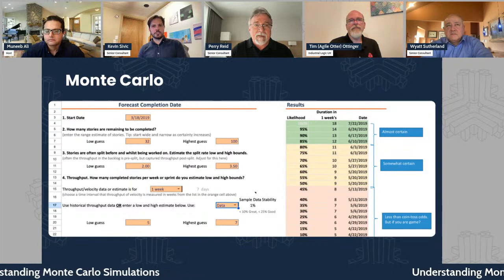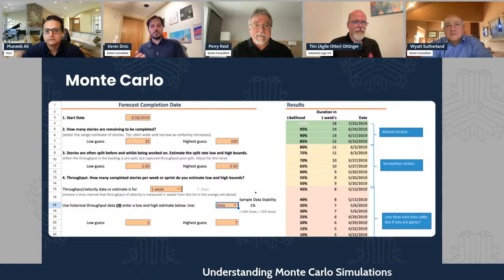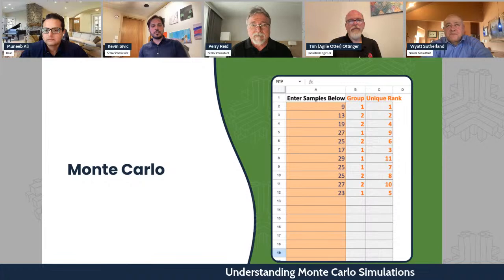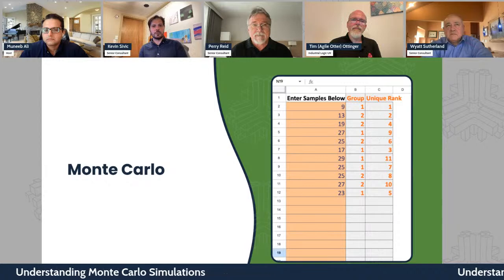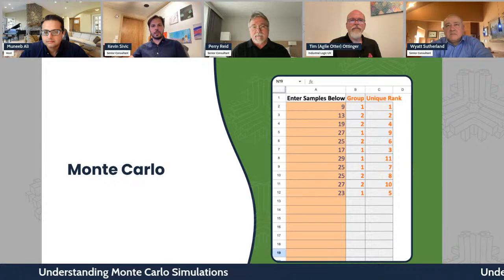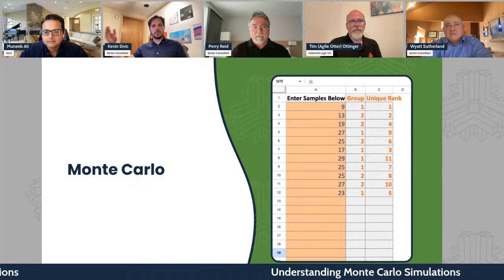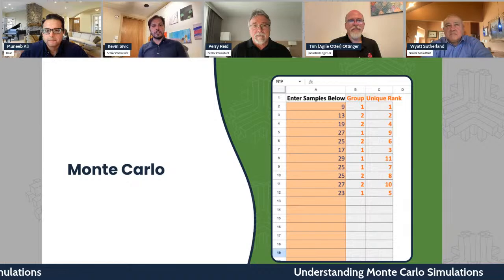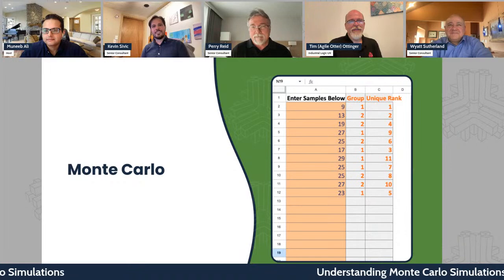Let me describe quickly what the simulations are actually doing. These are throughput samples — the number of cards done each week. In the background, it's rolling a dice: the roll was six, so I pick 25; roll again, pick 29 — that's the throughput chosen for each week. When we've gotten 100 things done — the number we're forecasting — we record what week that was and do it again and again, 10,000 times. You could do this manually, but nobody would enjoy it, which is why these spreadsheets exist. What I love is it's not subject to optimism or pessimism — one answer is as good as another, chosen randomly and mechanistically.